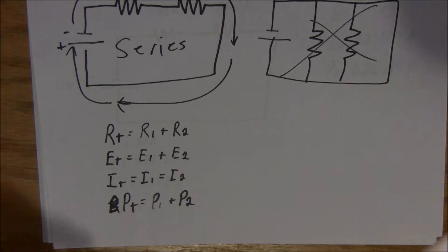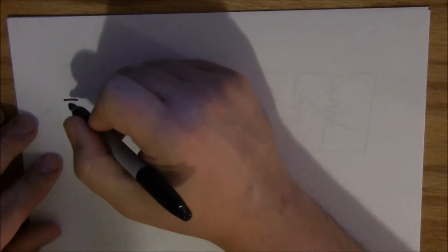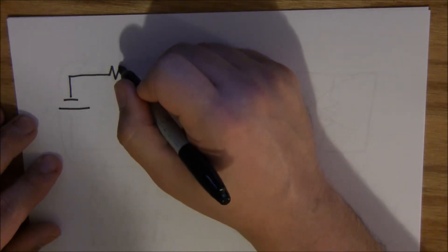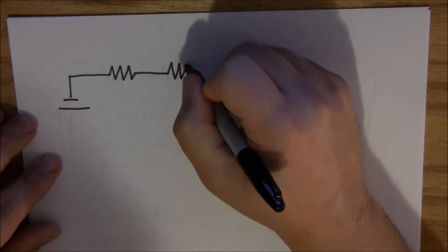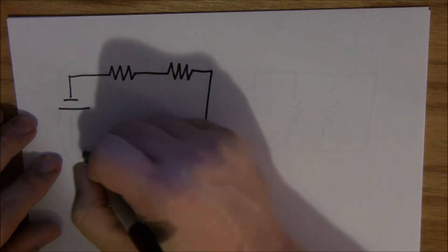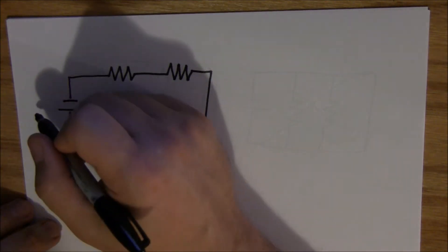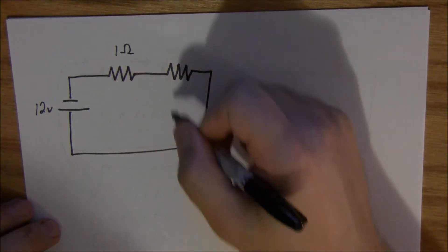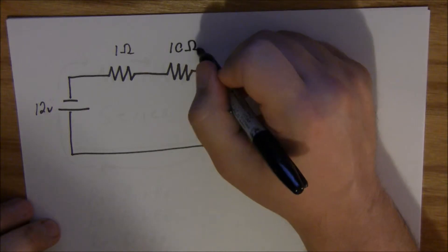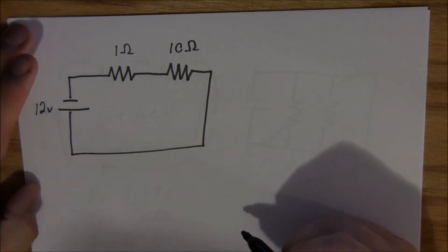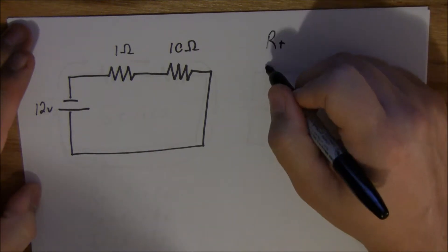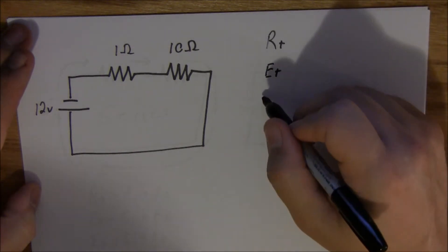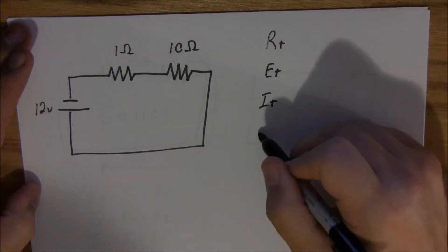So let me grab another piece of paper and we'll do a down and dirty little series circuit. Now let's draw our series circuit again. Let's say we're running this off of a 12 volt battery. Let's say this resistor is 1 ohm and this resistor is 10 ohms — I'm doing this just to make the math easy. So we need to find our totals: R total, E total, I total, and P total.